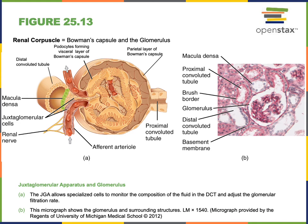The liquid that enters the lumen of Bowman's capsule flows into the proximal convoluted tubule, then down the descending limb of the loop of Henle, up the ascending limb of the loop of Henle, and then into the distal convoluted tubule. The distal convoluted tubule folds back to contact the renal corpuscle at the afferent arteriole.